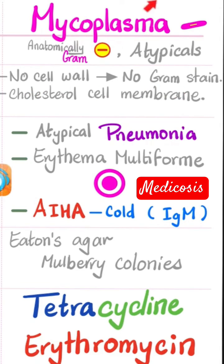Moreover, if I am your patient with mycoplasma pneumonia and you try to treat me using penicillin, I'll have a second moment with you. Penicillin is a cell wall synthesis inhibitor. Why would you give me a cell wall synthesis inhibitor to treat an organism that does not have a cell wall? What are you trying to inhibit?